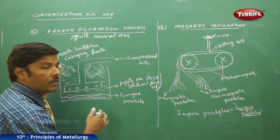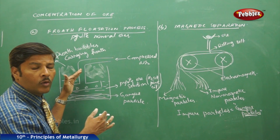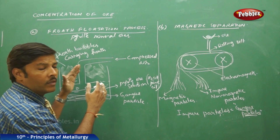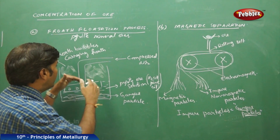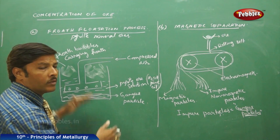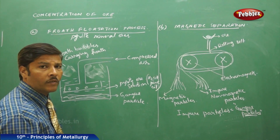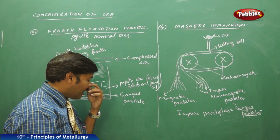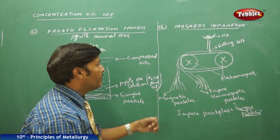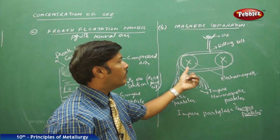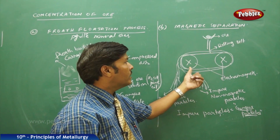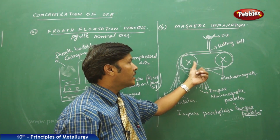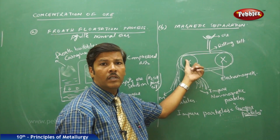In this way, the impurities and the purified pyrite ore particles are separated through this method because of the difference in their density and particle size. For magnetic separation, the advantage is that we take two electromagnets fitted with a rolling belt.